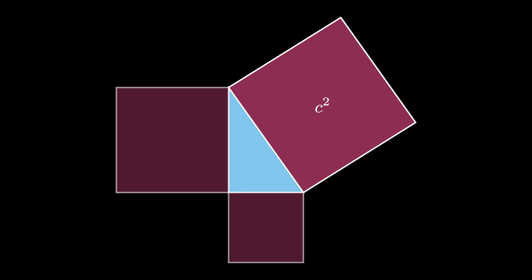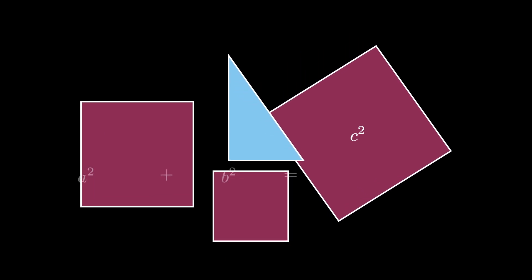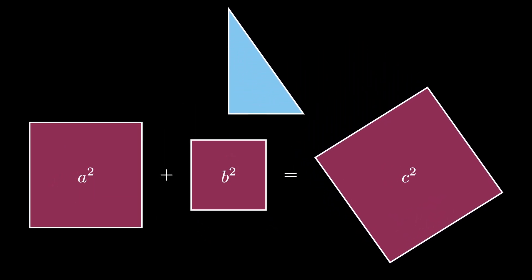This c by c square was constructed using the a by a square and the b by b square coming off the legs of the right triangle. From this we have to conclude that a squared plus b squared equals c squared, where a and b are the legs of a right triangle with hypotenuse of length c. And this concludes our hinge dissection proof of the Pythagorean theorem.